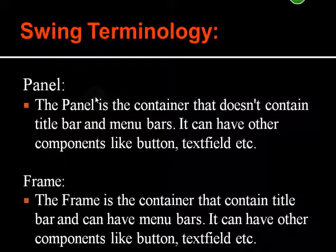Next is panel. Panel is a container which does not have any title bar or menu bar, but it can contain other components like button, text field, JTextArea, JPasswordField, JLabel, JRadioButton, and JCheckBox. These are the different components that can be held by the panel container.